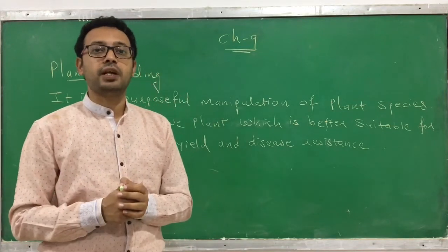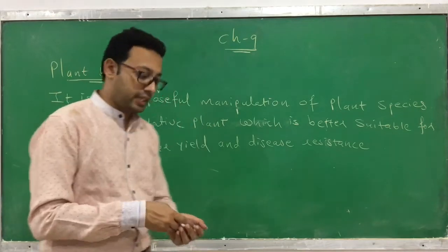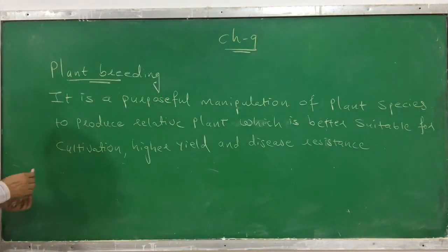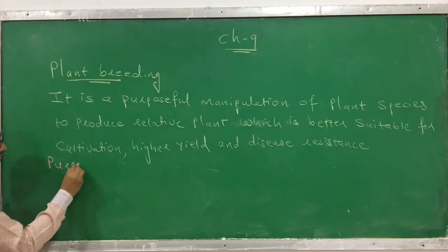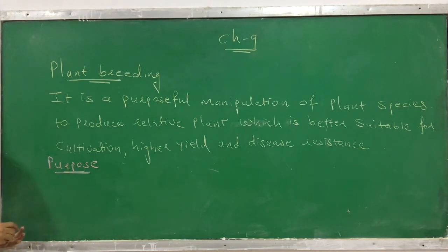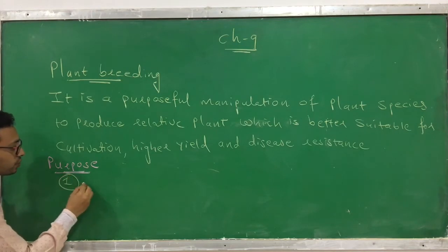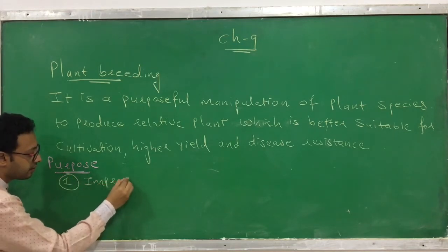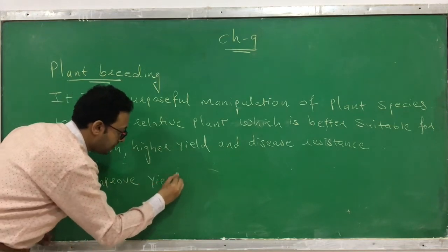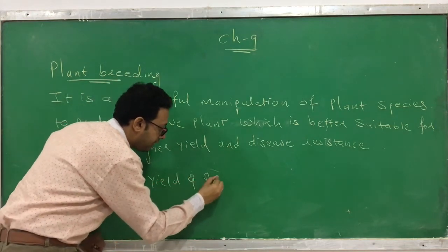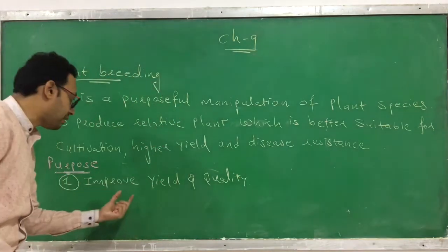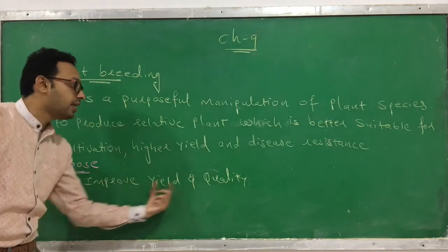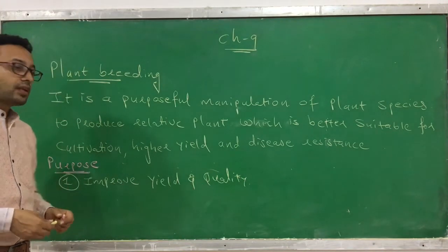Why are we performing plant breeding? What are the purposes? There are a number of purposes. The first and most important is to improve yield and quality — we want to improve food production in terms of quantity and the quality of the food product.